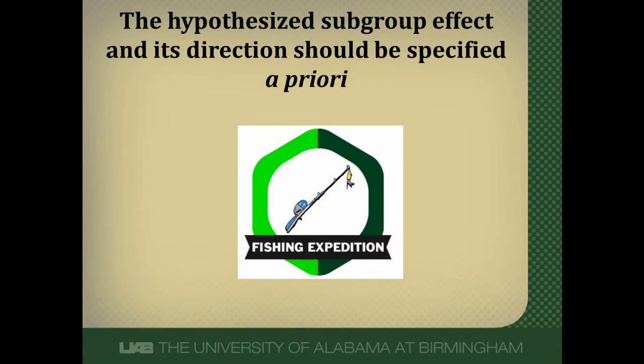Researchers also ought to be able to say upfront what they think the subgroup effect will be and its direction — meaning will it be beneficial or harmful. This ought to be done ahead of time and not after they look at the data, because once you look at the data you can figure out what a potential subgroup effect will be. A subgroup effect is more plausible if it's thought of ahead of time and then tested for. We worry that anything that rises after data is analyzed is really a fishing expedition trying to find something positive.